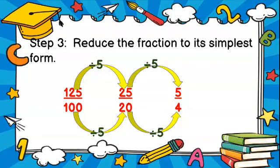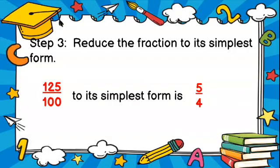Step 3: reduce the fraction to its simplest form. Here we have 125 over 100. We see 125 divided by 5 gives us 25. That same 5 is used with our denominator 100, so 100 divided by 5 brings us to 20. This can be further broken down: 25 divided by 5 gives us 5, and 20 divided by 5 gives us 4. So 125 over 100 in simplest form is 5 fourths.